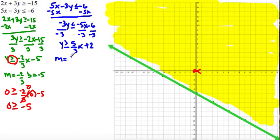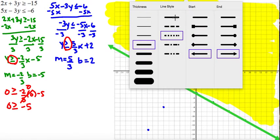I do the same thing with the second equation. My slope is 5/3 and my y-intercept is 2. I start at positive 2, go up 5, right 3, then extend by going down 5, left 3. Since the inequality symbol is greater than or equal to, my line is part of the solution, so I draw a solid line.